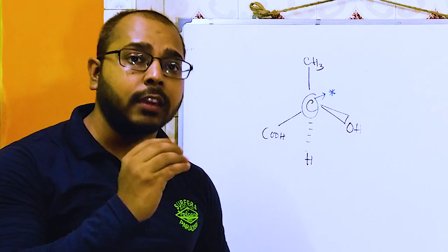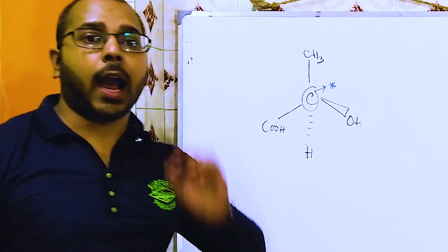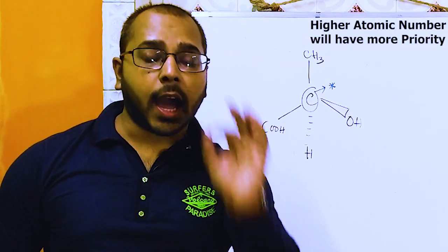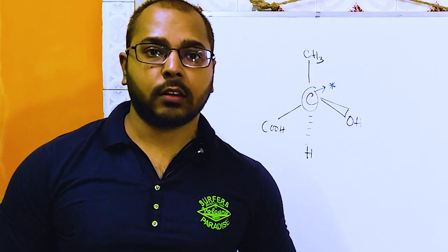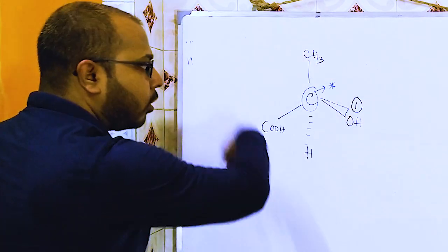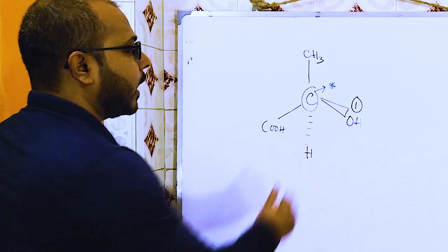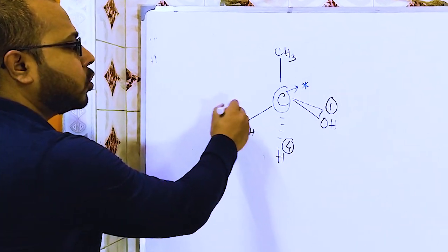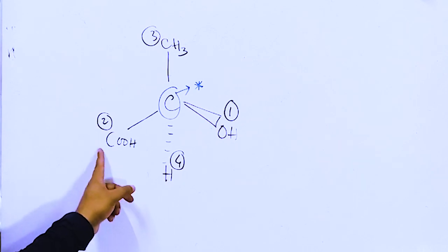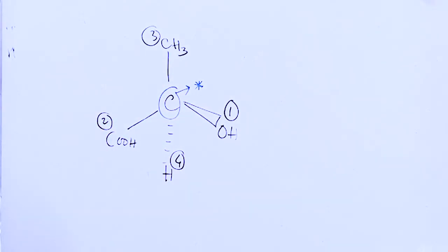Now we need to assign priority to these four groups. How can we give priority? Higher atomic number will get higher priority. Oxygen, attached to carbon, has the higher atomic number among these four groups — that is why it is symbolized as 1, and hydrogen is obviously 4. This group is 2 and this is 3. You may ask how. Both are carbon, but the next atom attached to one is hydrogen and the next atom attached to the other is oxygen, so oxygen-bearing carbon gets higher priority.